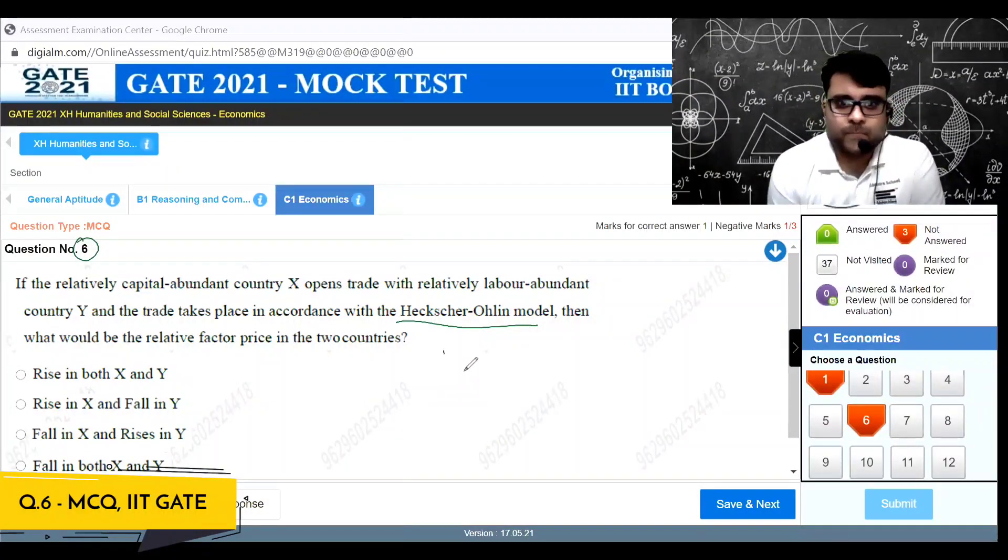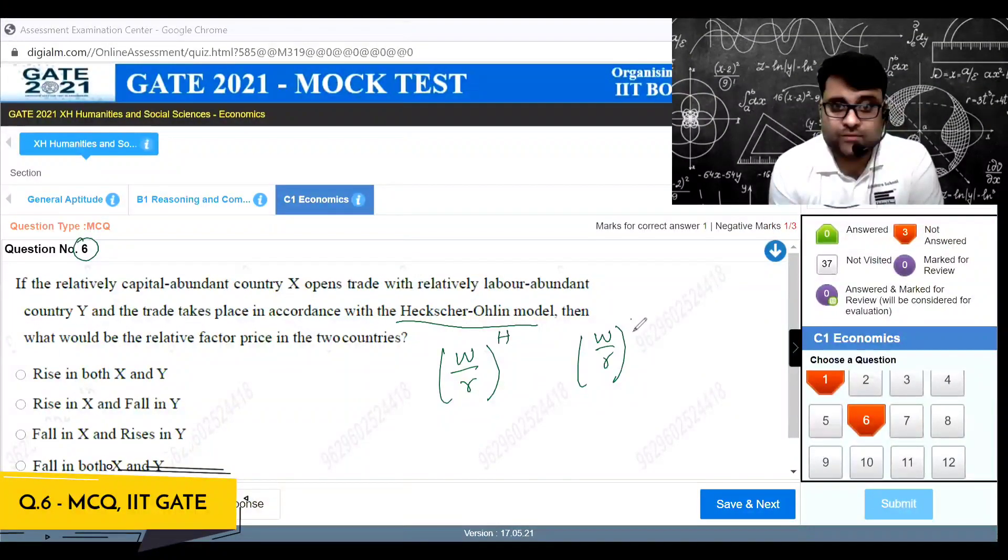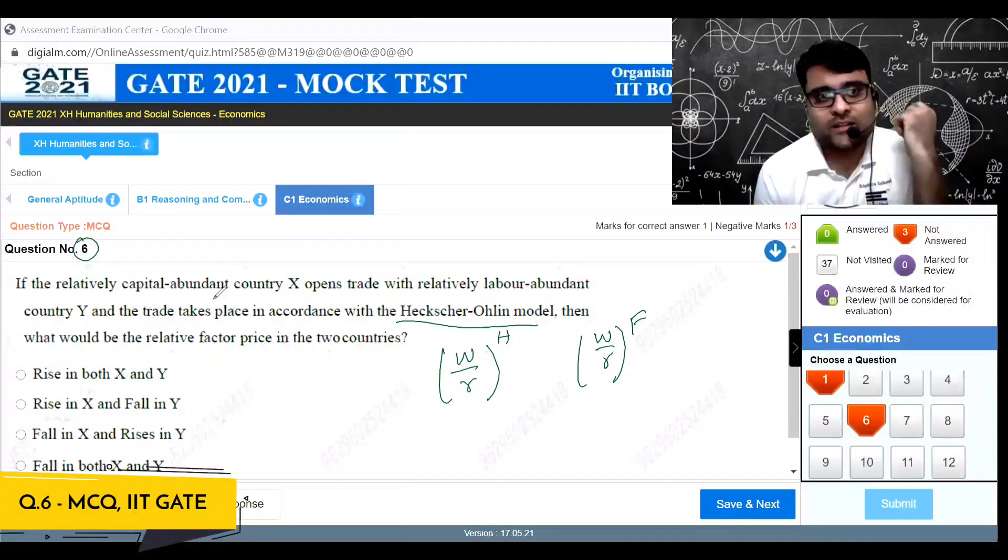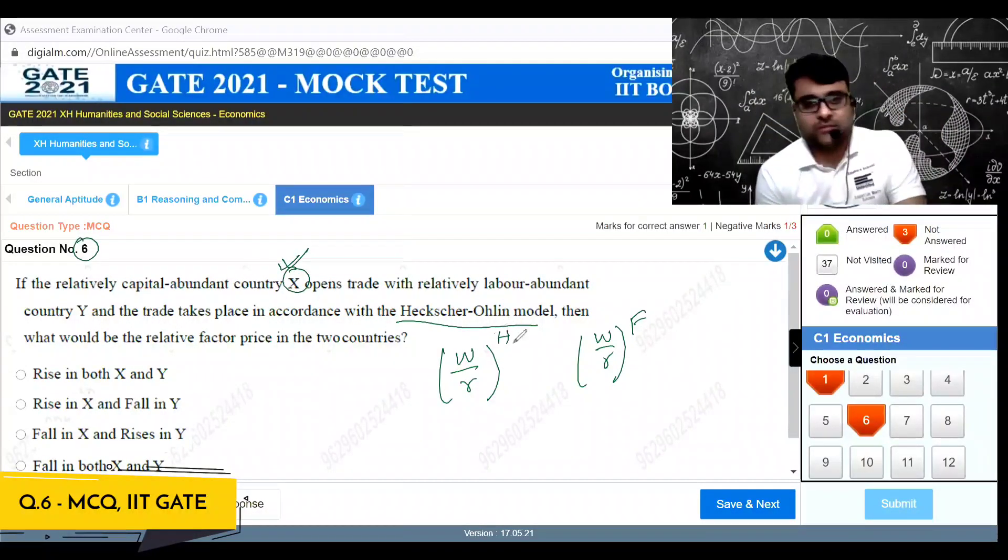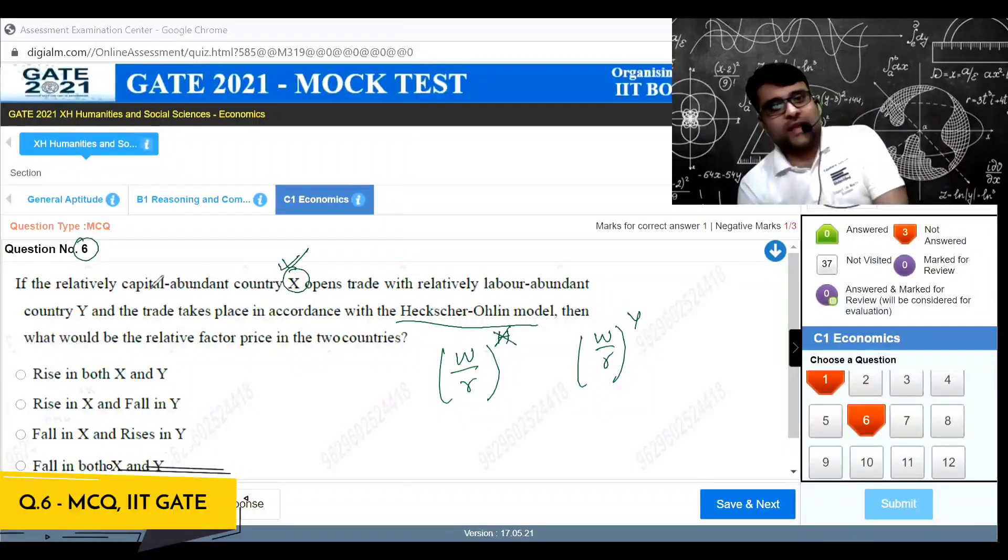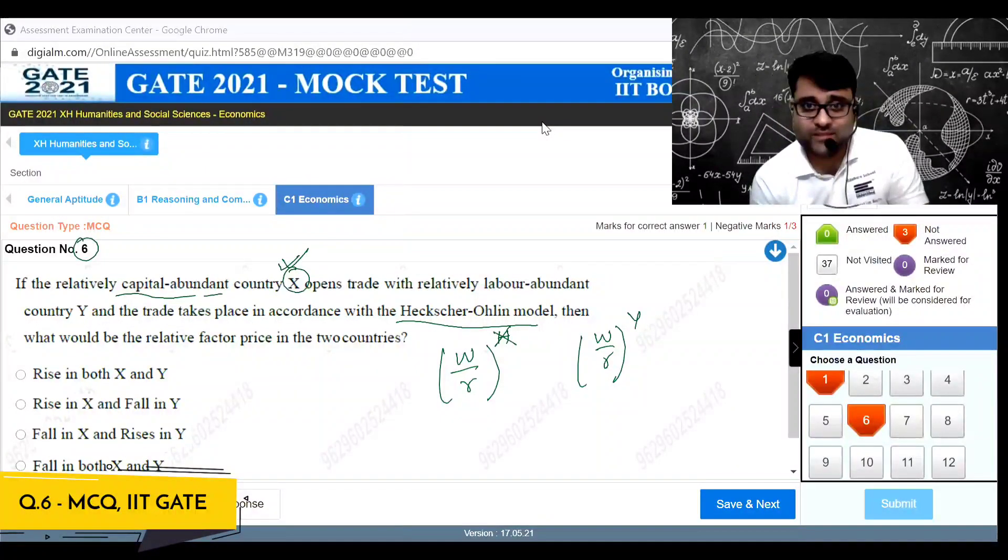I am talking about the relative factor price as w by r. What will happen to w by r in the home country and what will happen to w by r in the foreign country? Please understand that country X is capital abundant, supposing, and the foreign country is country Y.